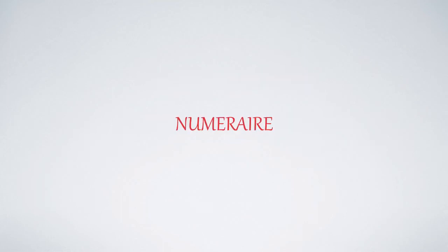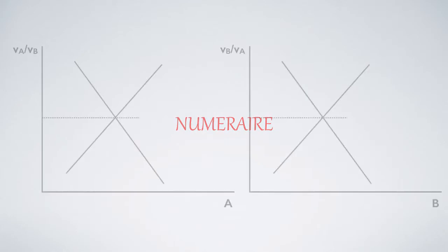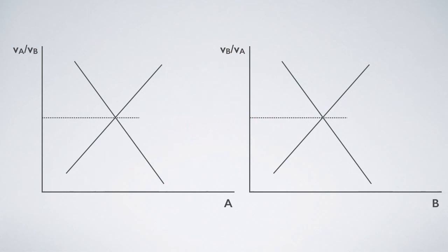This video reinstates Oscar Lange's invalid theorem. If there are two products, there are also two markets, but only one relative price.